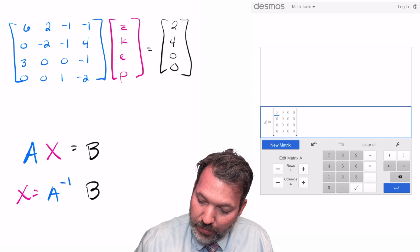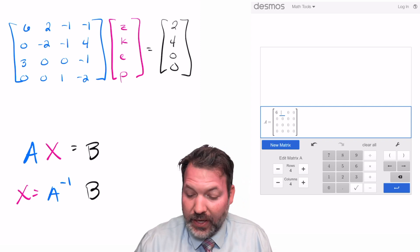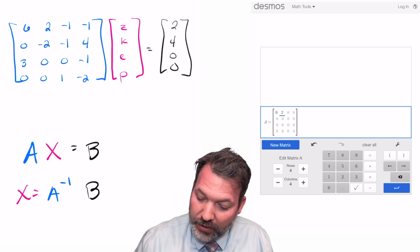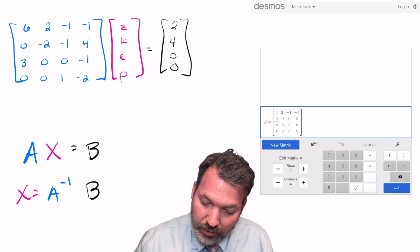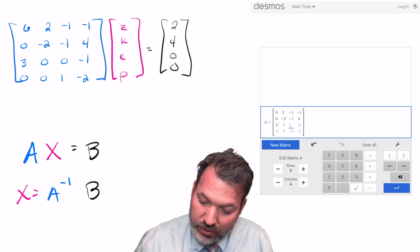So, for example, we can set up our first matrix using something like the Desmos matrix calculator. And going across that first row, we've got 6, 2, negative 1, negative 1. On the second row, 0, negative 2, negative 1, and then 4. On the third row, 3, 0, 0, and then negative 1. And then finally, on that last row, 0, 0, 1, and negative 2.